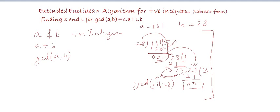The GCD of two positive integers can also be expressed as their linear combination. GCD of A, B is equal to S times A plus T times B. This extended Euclidean algorithm helps us find the value of S and the value of T.